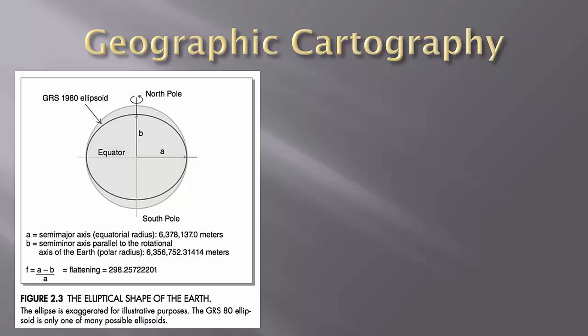Polar flattening and equatorial bulging of the Earth caused some cartographers to refer to the Earth as an oblate spheroid. The oblate qualifies that qualities of the Earth can be modeled using a reference ellipsoid as shown in Figure 2.3 of your book and here on the slide.